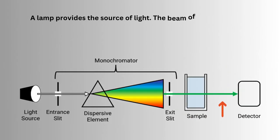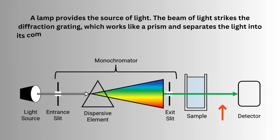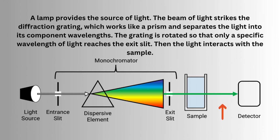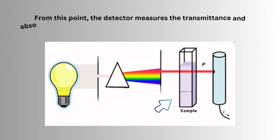The beam of light strikes the diffraction grating, which works like a prism and separates the light into its component wavelengths. The grating is rotated so that only a specific wavelength of light reaches the exit slit. Then the light interacts with the sample. From this point, the detector measures the transmittance and absorbance of the sample.